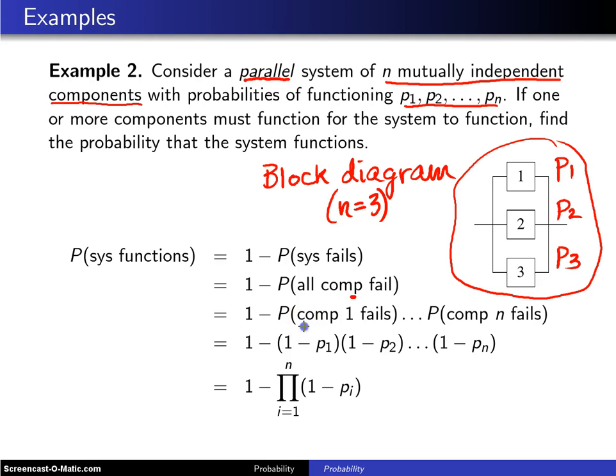So that is the probability that component one fails times component two fails all the way up to component n fails.